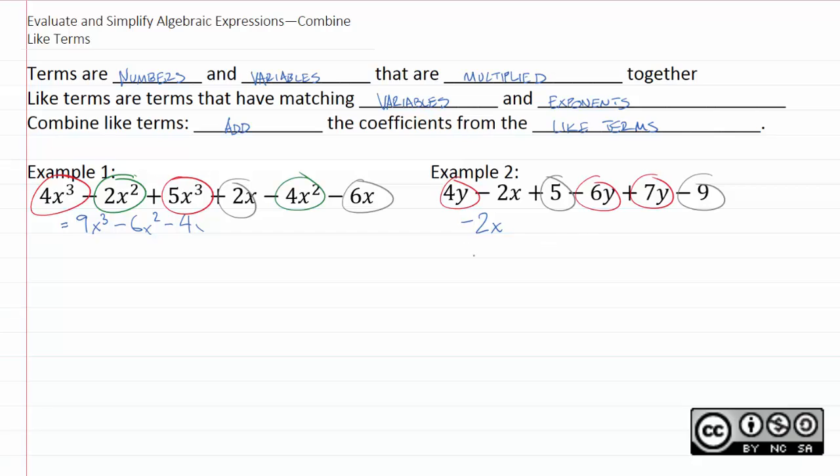As for the red terms, 4 minus 6 plus 7. Well 4 plus 7 is 11, 11 minus 6 is 5. So we get 5y. 5 minus 9 for the gray terms is negative 4. And now this is as simple as it gets. And so we have now successfully combined both of these.